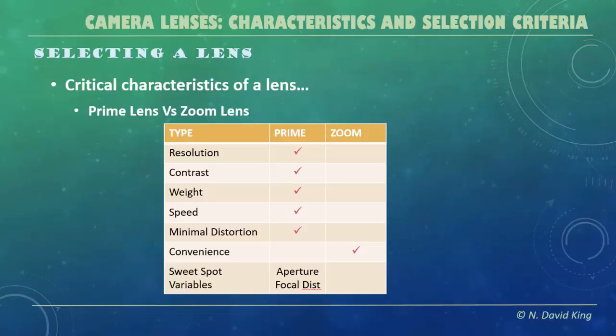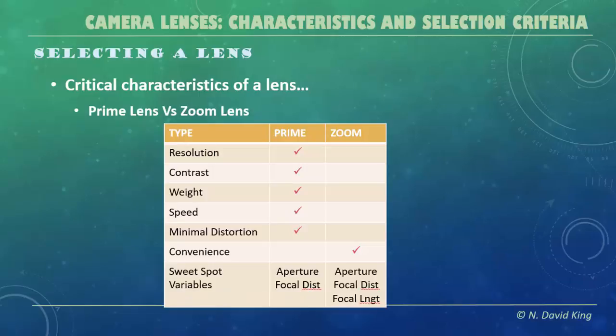The sweet spot variables are important because the more there are, the more there is to go wrong in terms of how that lens is set. In a prime lens, you've really only got two variables: the aperture and the focal distance. Different types of lenses are designed based on how they'll be used — a long lens is optimized for focusing further out; a macro lens is designed to be focused close. In a zoom lens we add a third variable: the focal length. At what setting is it — 70mm? 200mm? Every lens has optimal settings, and the question is whether those happen to be where you're shooting.